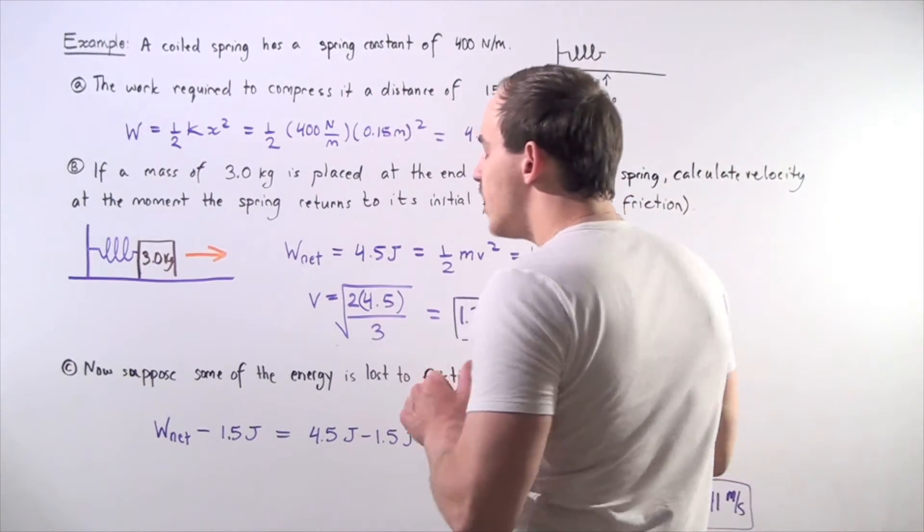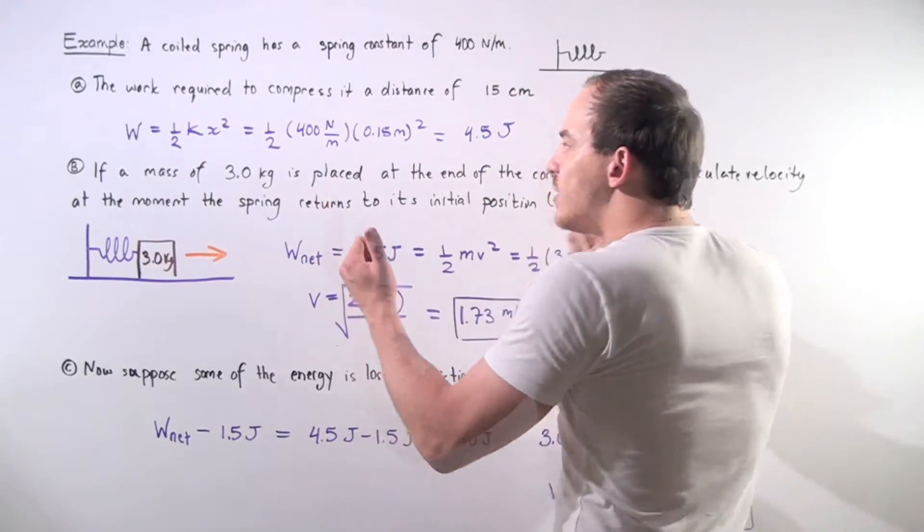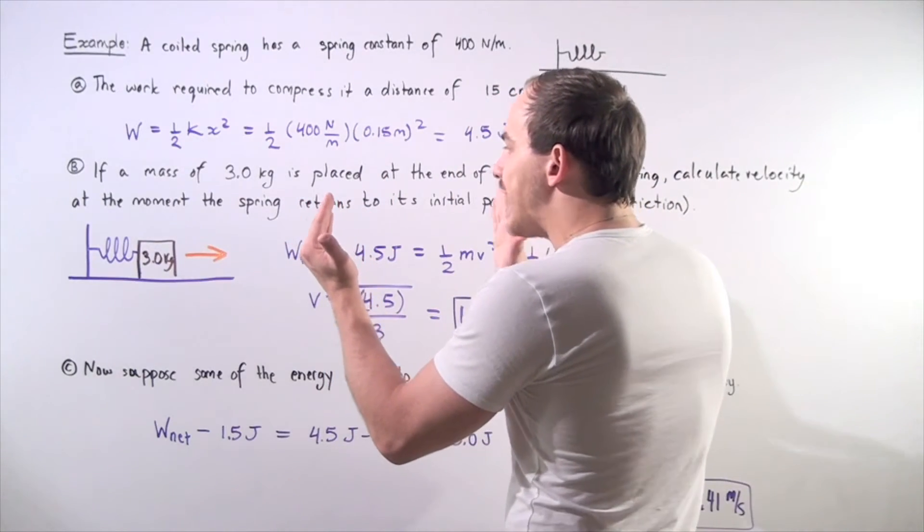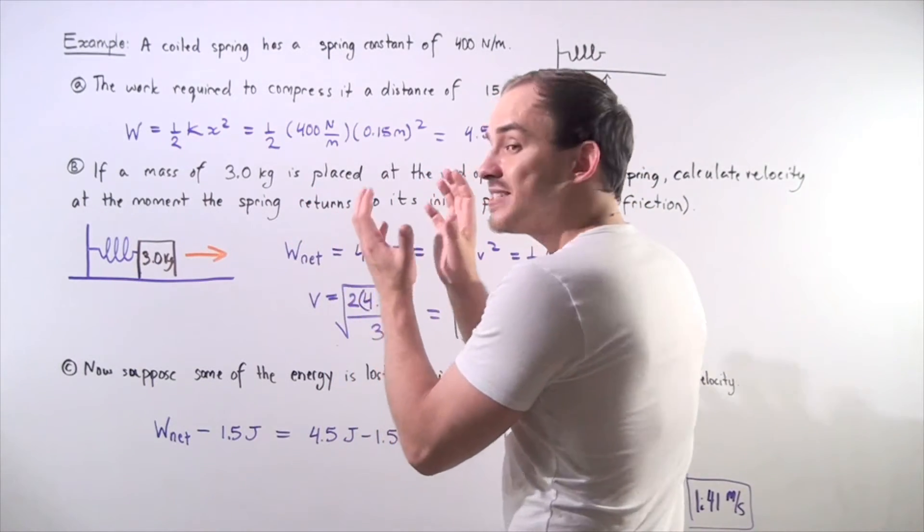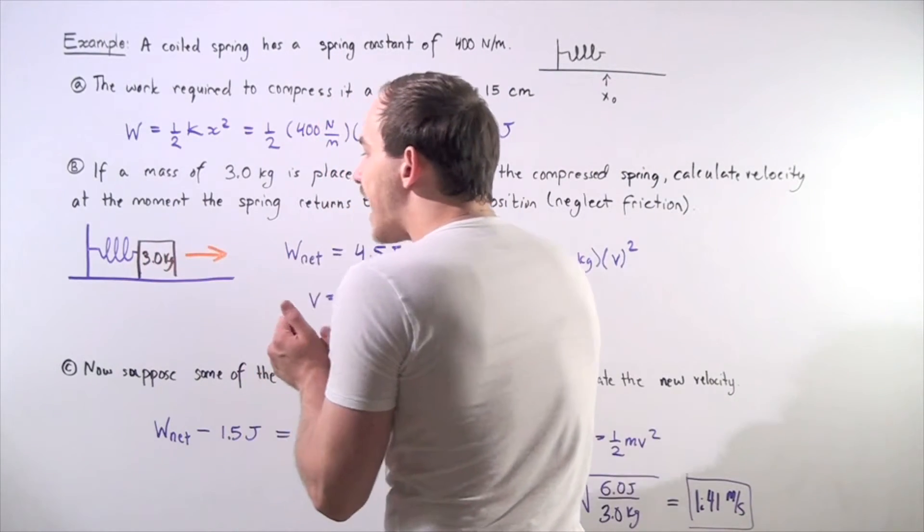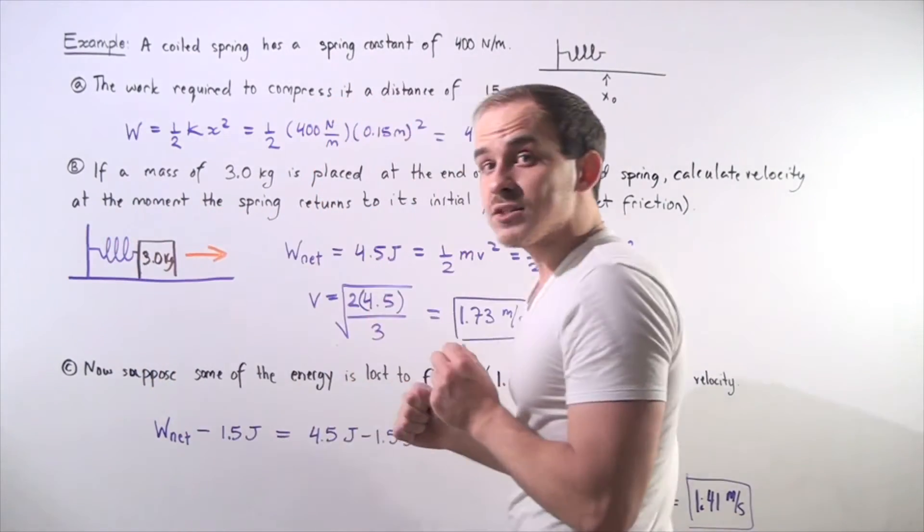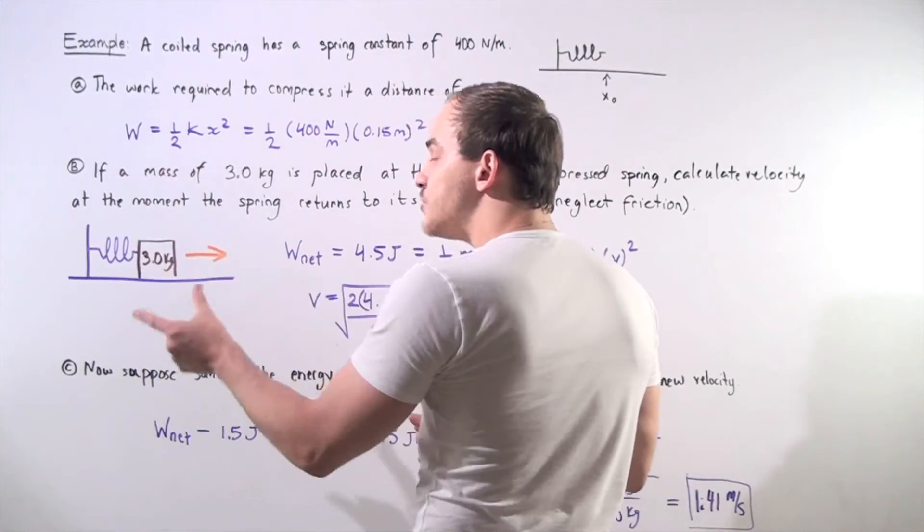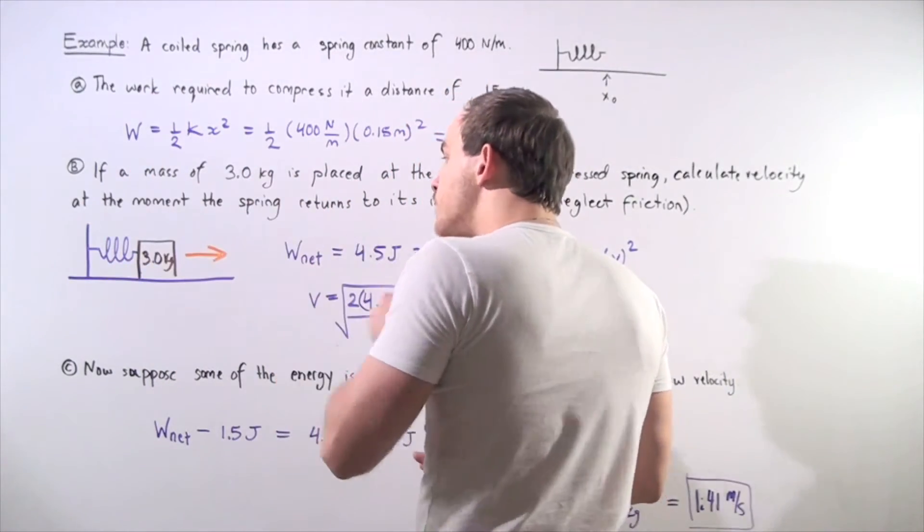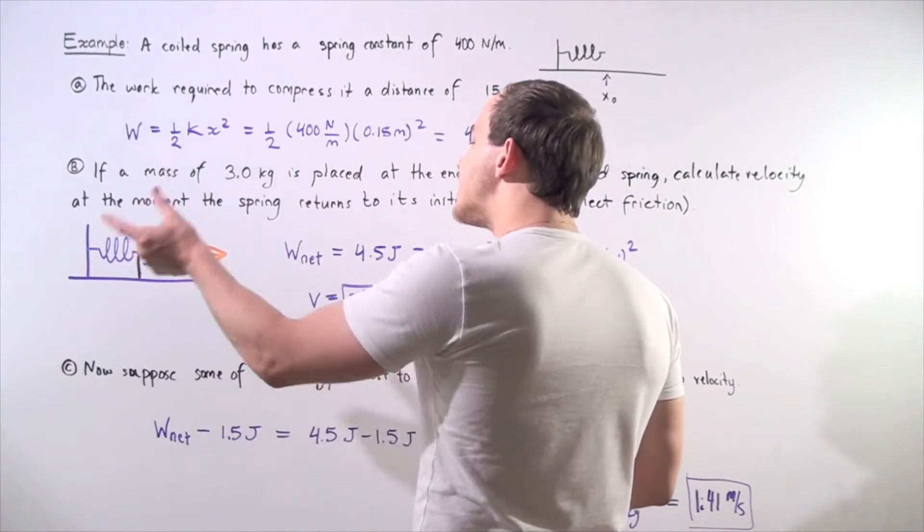In other words, in part A, what we essentially did was we compressed the spring and we transferred energy into our spring. When we transferred energy into the spring, now there's energy stored in that spring. If we place the block on a frictionless plane and that spring is released, what happens is all the energy that was stored into the spring will transfer into the block. All the energy that was stored in the spring will transfer to the block.